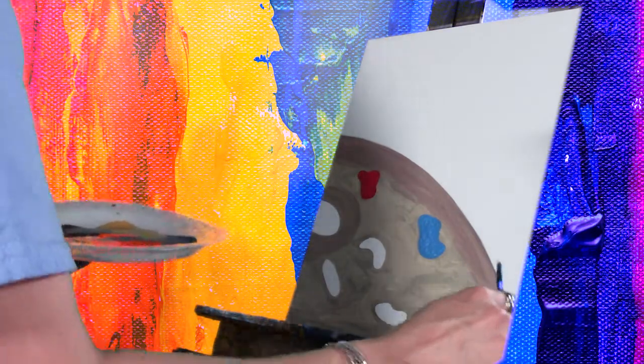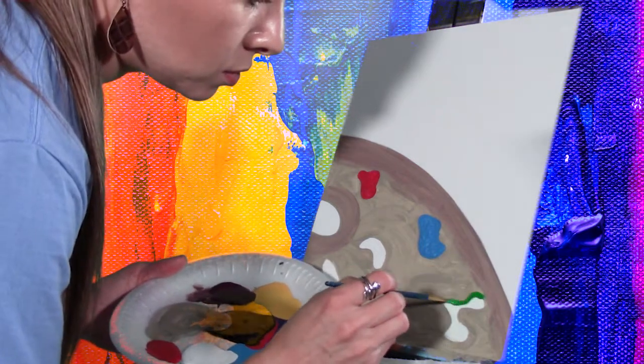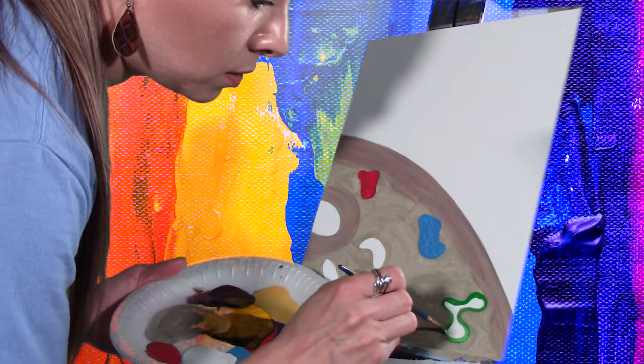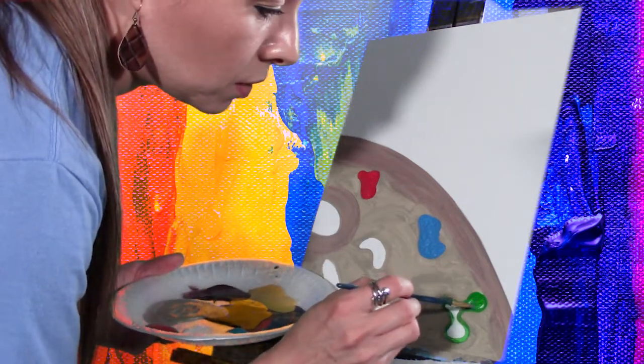The next color is green. Trace it again and then fill it in with green and dab it in.